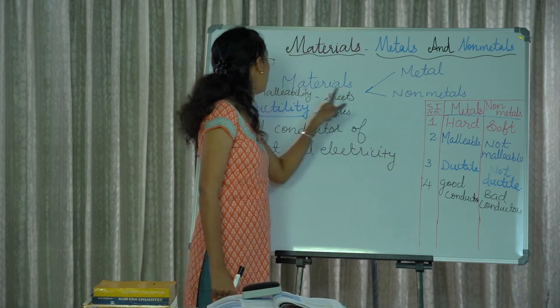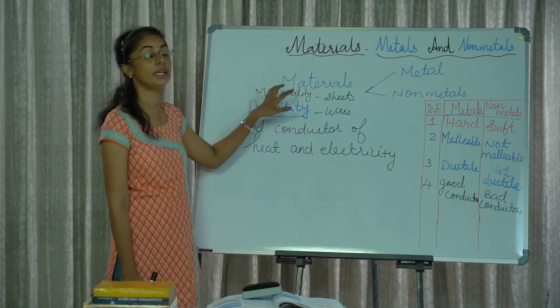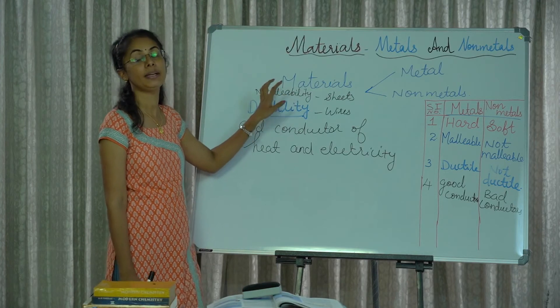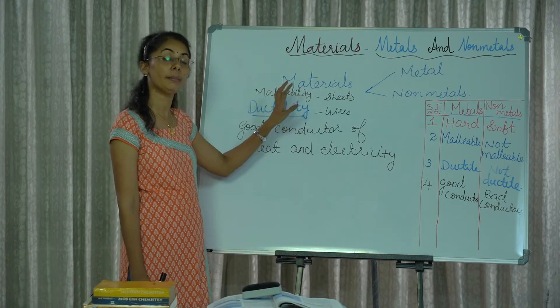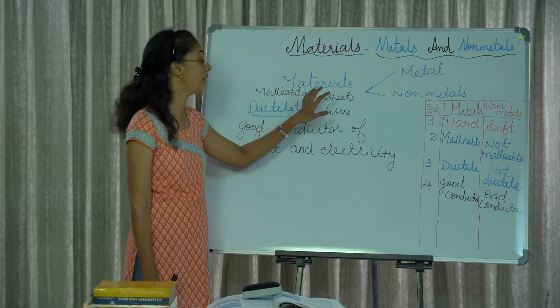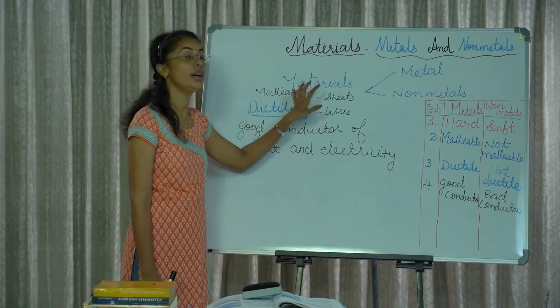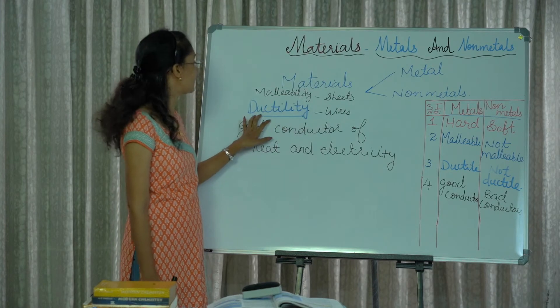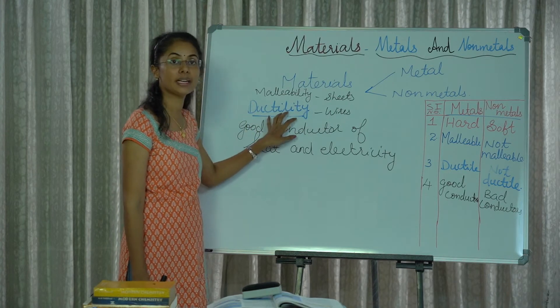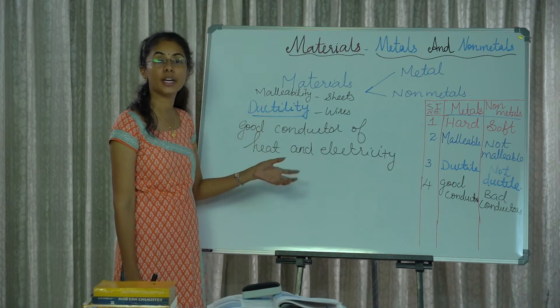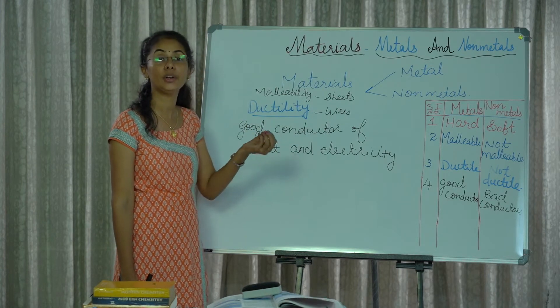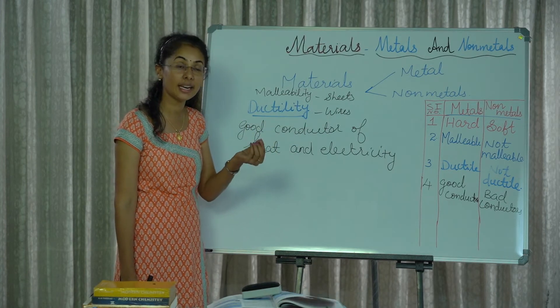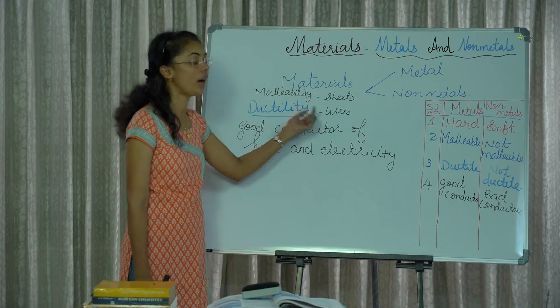Malleability means metals can be converted into thin sheets. Ductility means metals can be drawn into thin wires. These are the differences between malleability and ductility.